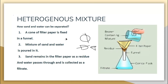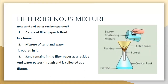We fix the cone of filter paper in the funnel and place the funnel over a conical flask. When we pour the sand-and-water mixture in, sand will not pass through the microscopic pores of the filter paper and is collected there as the residue, while water passes through and is collected separately as the filtrate.